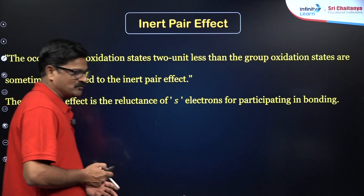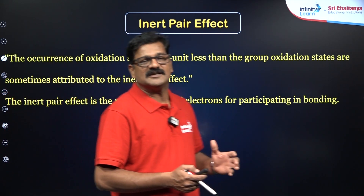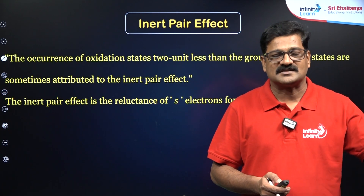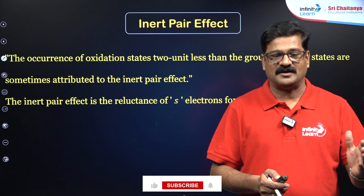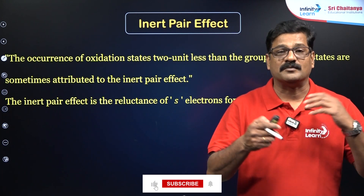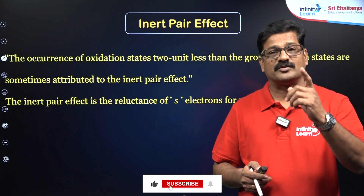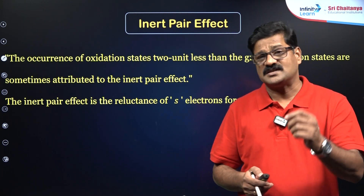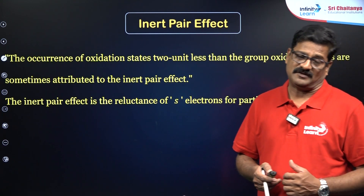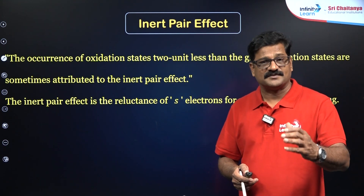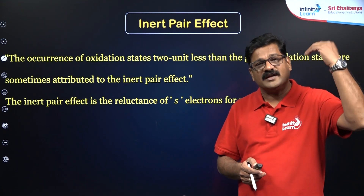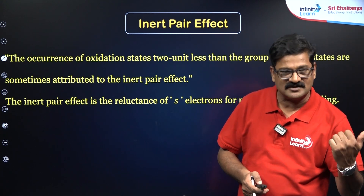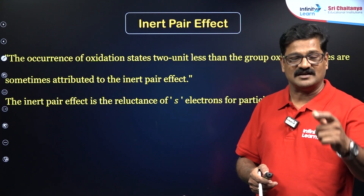In this inert pair effect, what exactly is it? It is the reluctance of the outer S-orbital pair of electrons to unpair in order to participate in bond formation. This effect is known as the inert pair effect. Because of this inert pair effect, the higher oxidation state is decreased and the lower oxidation state is increased.